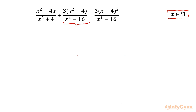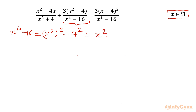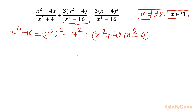I will begin with one algebraic identity: x⁴ - 16. We can write it as (x²)² - 4², which is a difference of two squares. So we can write it as (x² + 4)(x² - 4). For real solutions, x cannot be equal to ±2, since the denominator cannot be 0. Now I will replace this denominator x⁴ - 16 by (x² + 4)(x² - 4).